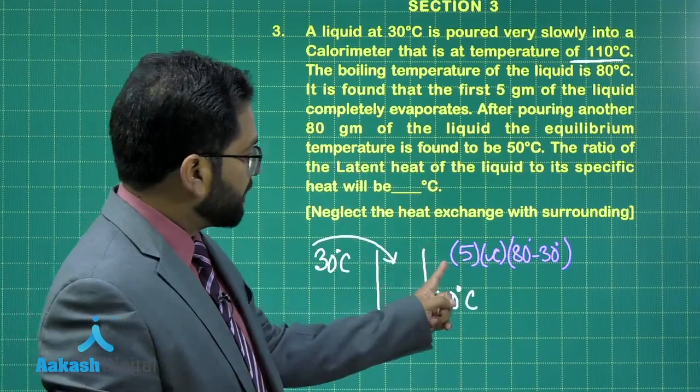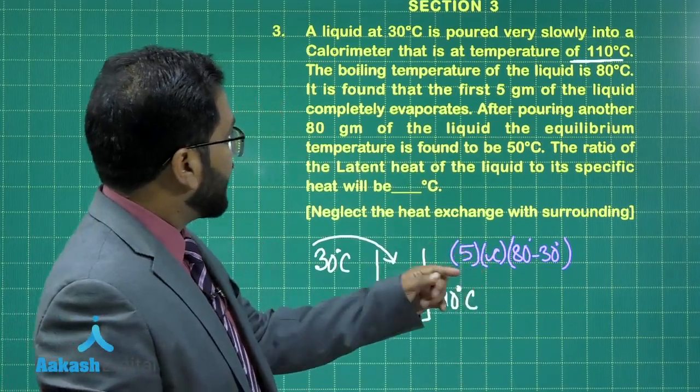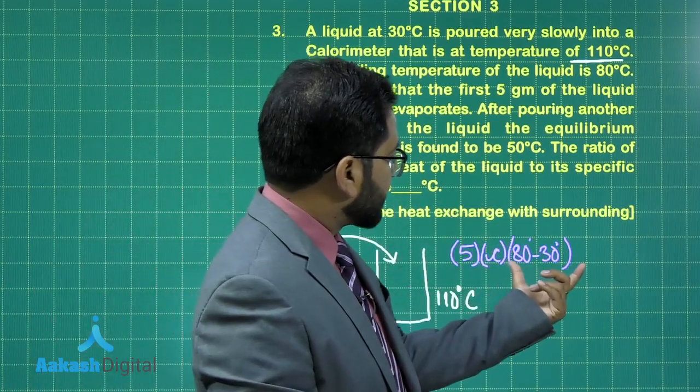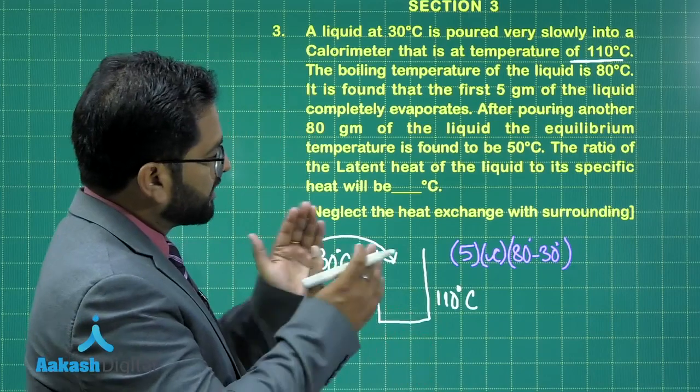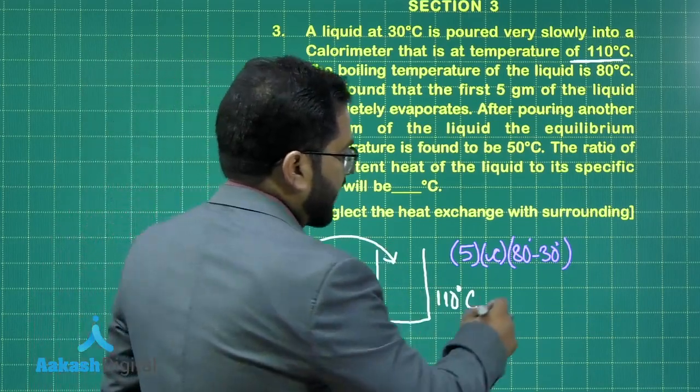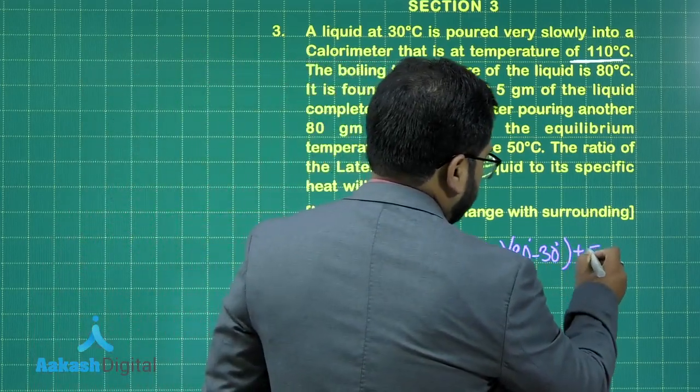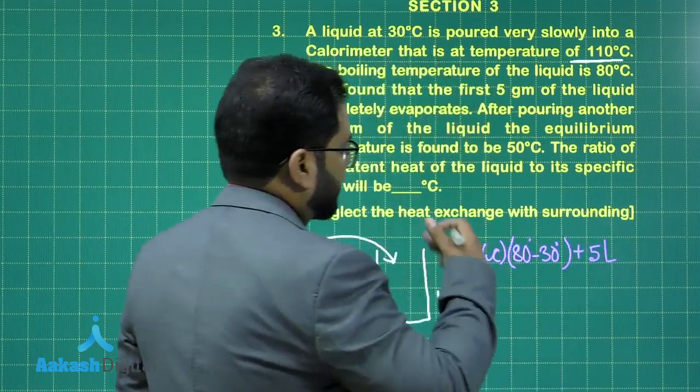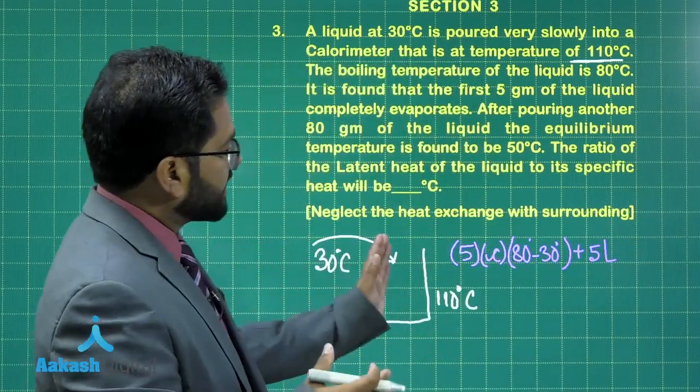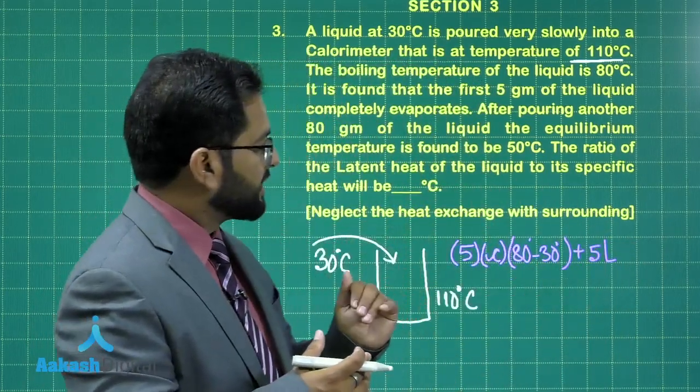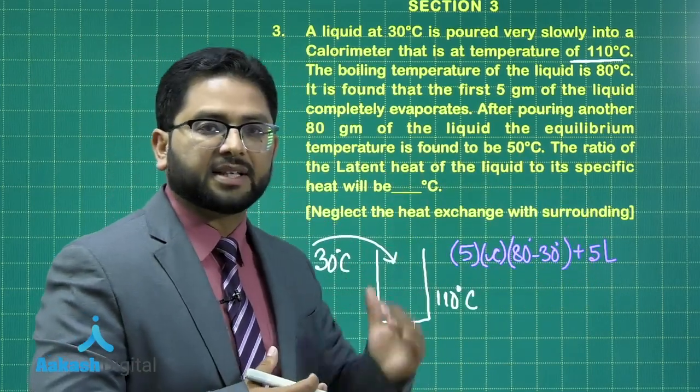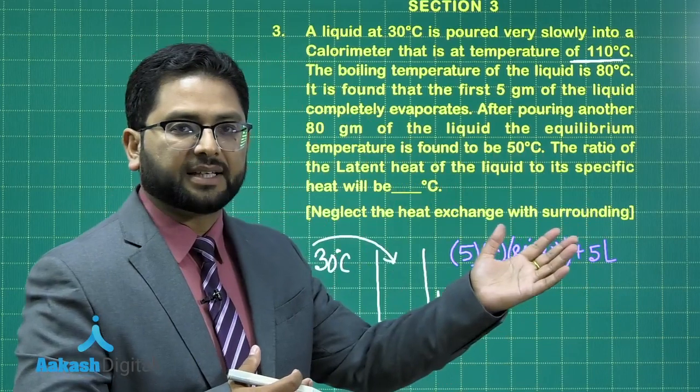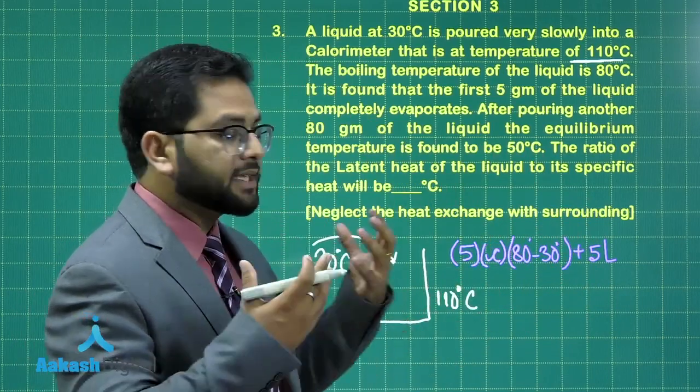So that comes to M, C, and delta theta from 30 degrees to 80 degrees. So this brings the liquid to 80 degrees, plus M into L, that's the latent heat. Now this condition satisfies that the liquid has evaporated, first coming from 30 to 80 and then evaporating. So this much is the heat gained.